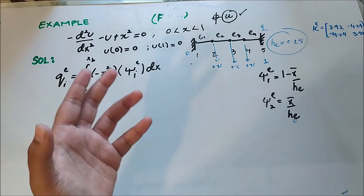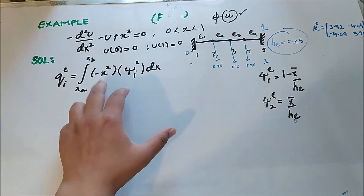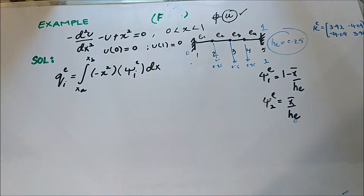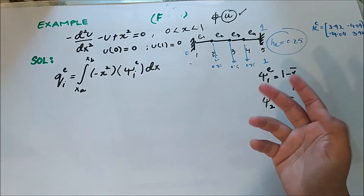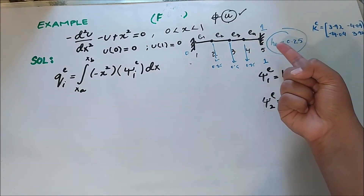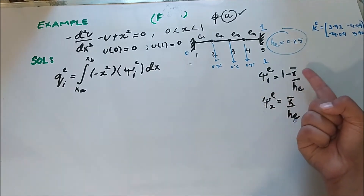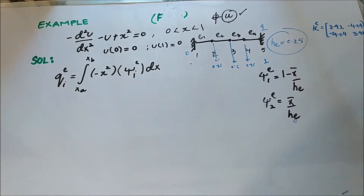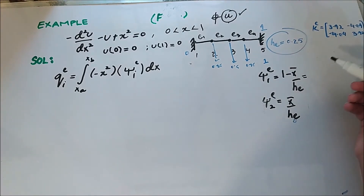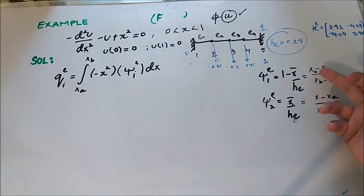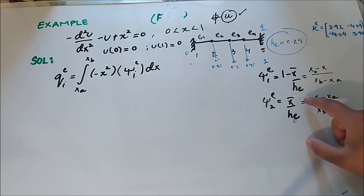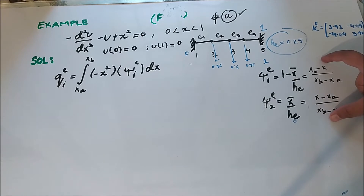The force here is not for the local system or element level — it is for the whole bar, the whole system. That is why we cannot simply solve it for a single element and assemble. We have to find it for each element. We plug the definition of Psi, but since x-bar is at the element level, we must use the global definition: Psi_1 = (x_b - x) / (x_b - x_a) and Psi_2 = (x - x_a) / (x_b - x_a).